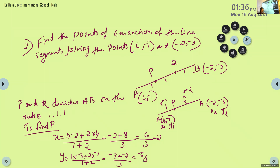K = 2/7. So the ratio K:1 is 2/7 : 1, which we can write as 2:7. Therefore, the point (-4, 6) divides the given line segment in the ratio 2:7.